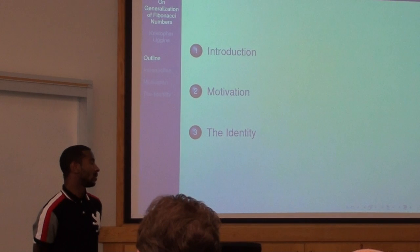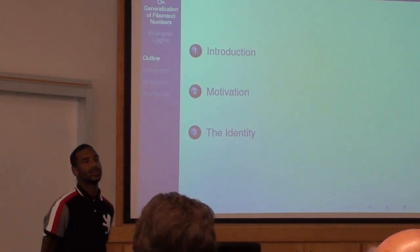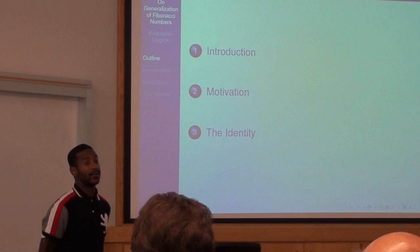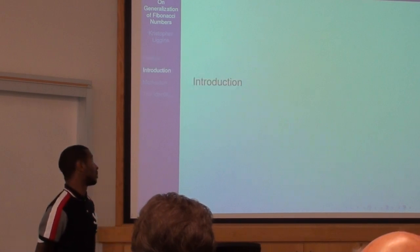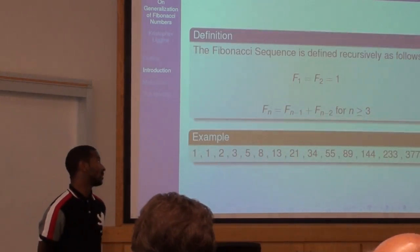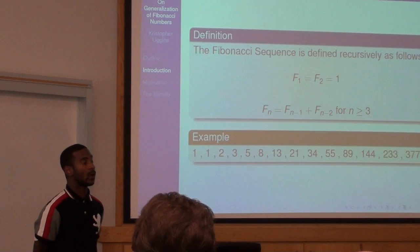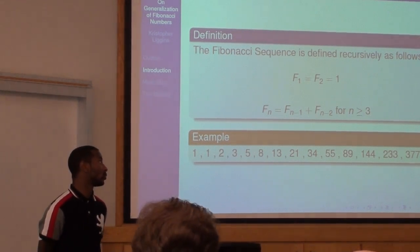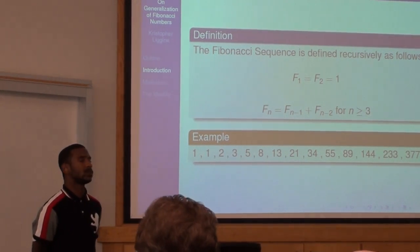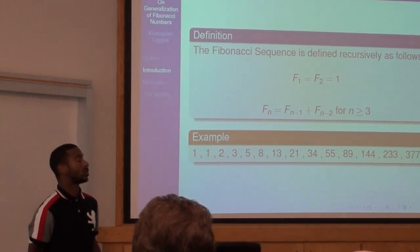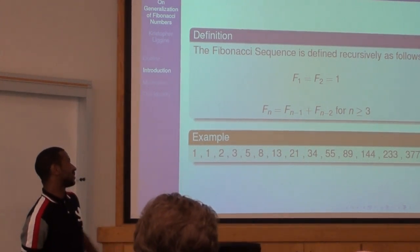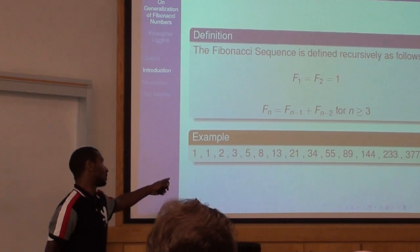The identity that was in the issue of the Fibonacci Quarterly in May 2011 as an advanced problem. The Fibonacci sequence is defined as if you start with F1 to be one and F2 to be one, Fn equals the addition of the preceding two terms. And this is an example of how the sequence will look.